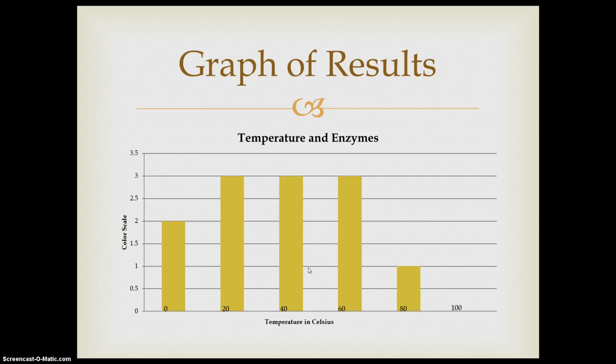This was a graph of our results. As you can see, 0 degrees Celsius was a 2. 20 degrees Celsius was a 3. 40 degrees Celsius was a 3. 60 degrees Celsius was a 3. 80 degrees Celsius was a 1. And 100 degrees Celsius have no color change.